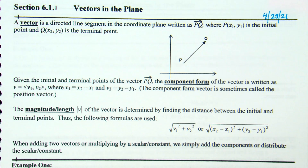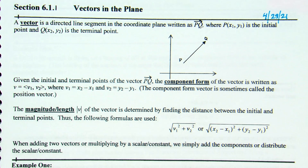Lesson 6.1, and this officially is part one or day one, whatever you want to call it. We are talking about vectors. If you look at the title of Chapter 6, I think it is Applications of Trigonometry. We start off in these first couple of lessons talking about vectors.